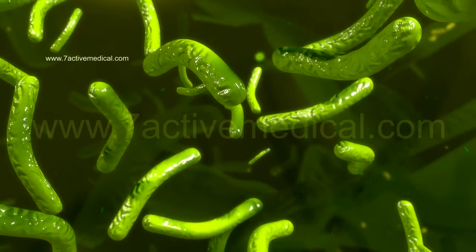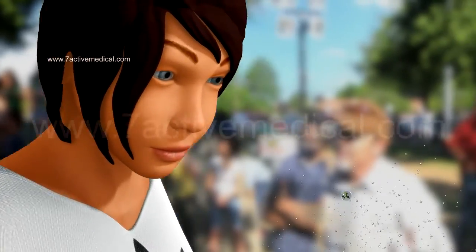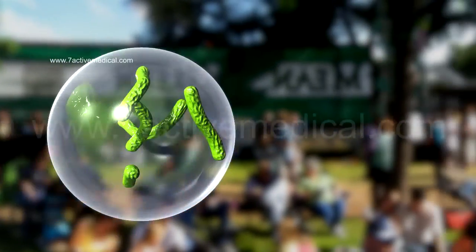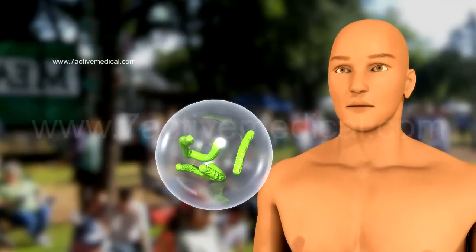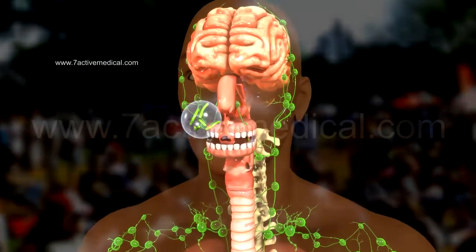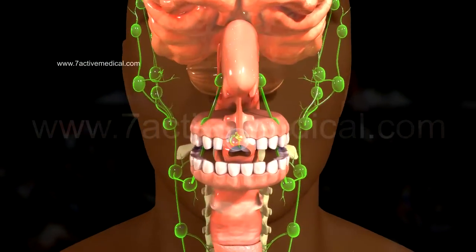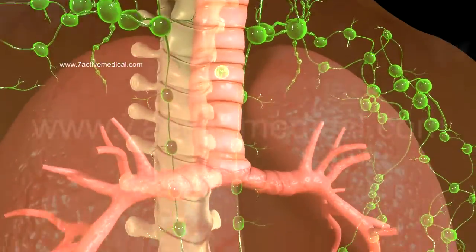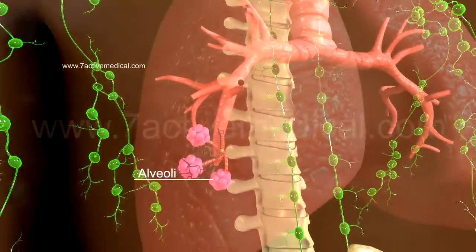Tuberculosis is an infection which spreads through the droplets from the cough of an infected person, which remain in the air for several hours. When the droplets are inhaled by another person, they travel down the person's trachea to reach the lungs, where they get deposited in the alveolar sacks.